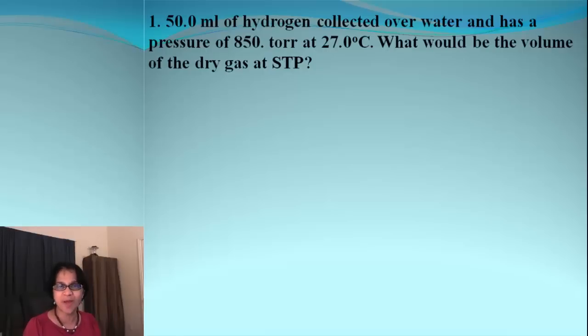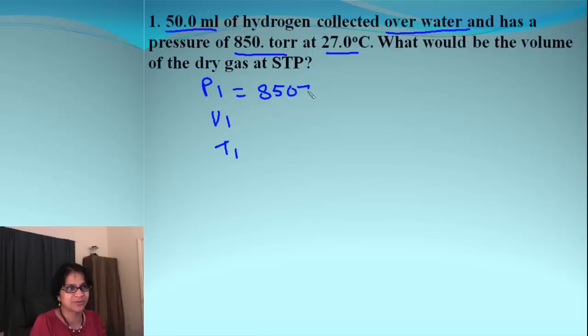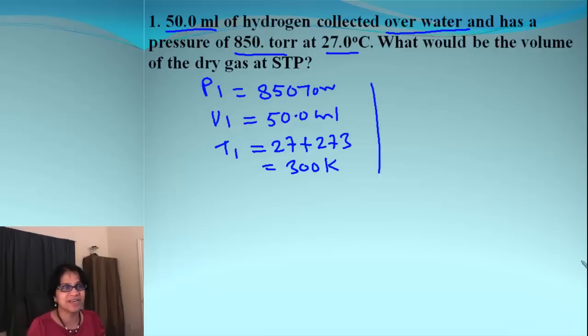Let's look at our very first problem and list down our values. We have volume given. Remember, it's collected over water and that's the pressure and that's the temperature. So if you want to list your P1, V1 and T1, what are those values? It's 850 torr. Then we have volume 50.0 milliliters and temperature is 27 Celsius which will be plus 273, so it will be 300 Kelvin.